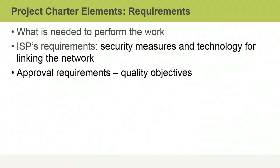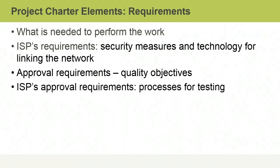A Project Charter should also contain approval requirements. It should describe the quality objectives for each deliverable in terms of output standards and approval requirements. This includes all the product-related reviews and processes for acceptance testing that will be carried out during the project. In this example, the Internet Service Provider's project approval requirements set out the processes for testing, acceptance, rejection, and resubmission of deliverables. These are tangible objects produced as a result of project execution.